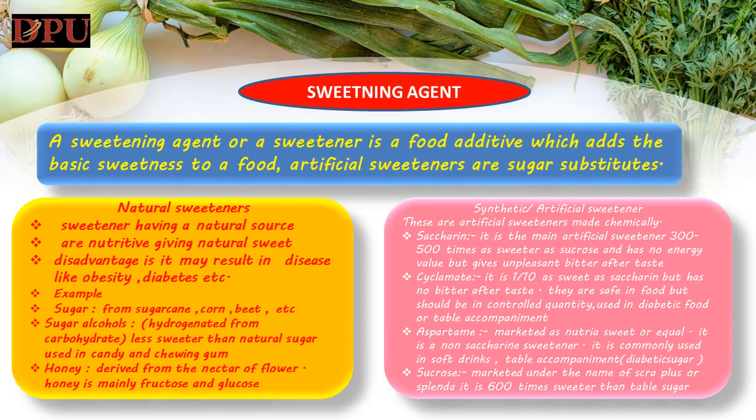Sugar alcohols: hydrogenated from carbohydrates, less sweet than natural sugar, used in candy and chewing gum. Honey: derived from the nectar of flowers; honey is mainly fructose and glucose, used in cooking, baking, spread on bread, served with bread and pancakes. Fruits: in the form of fruit juice, fruit extract, jam, jelly etc., used in sauces, dressings or spreads etc.